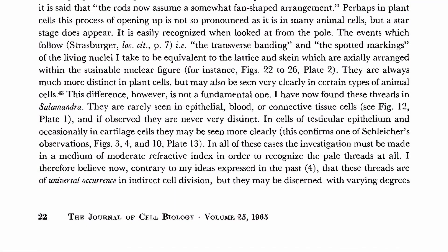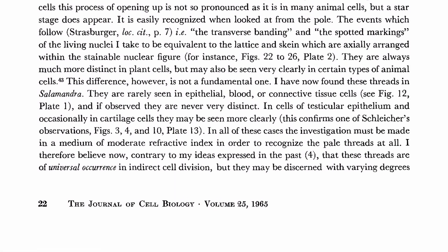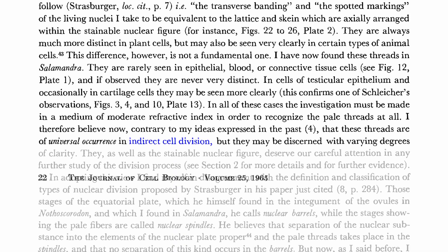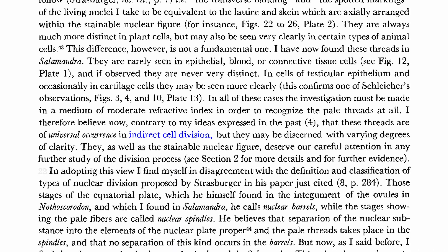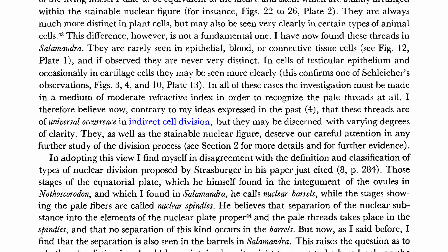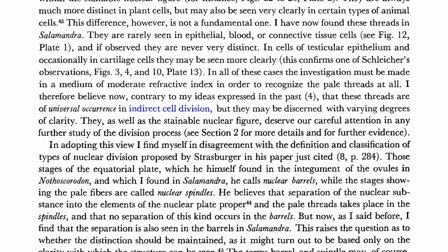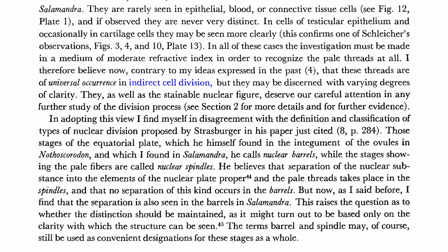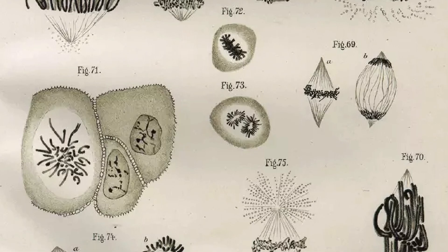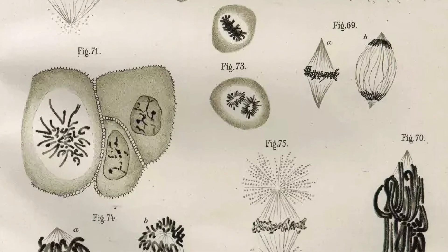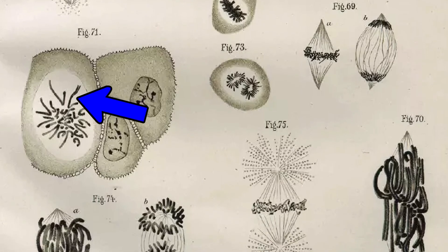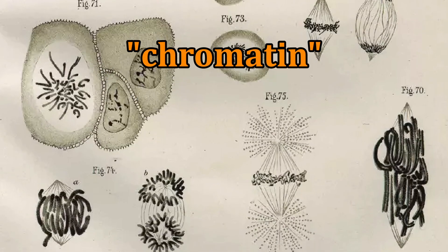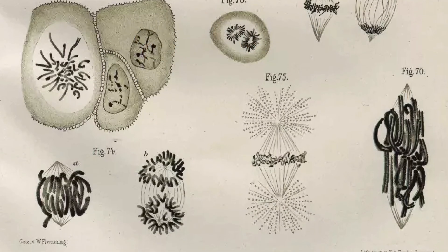In 1879, Fleming published a paper in which he coined the term indirect cell division. He called cell division in eukaryotes this because he noticed that the content in the nucleus had to transform strictly before cell division could take place. The dyes he used to distinguish parts of the cell unveiled a fibrous scaffolding inside the nucleus, which he dubbed chromatin — a word with Greek origins meaning stainable.